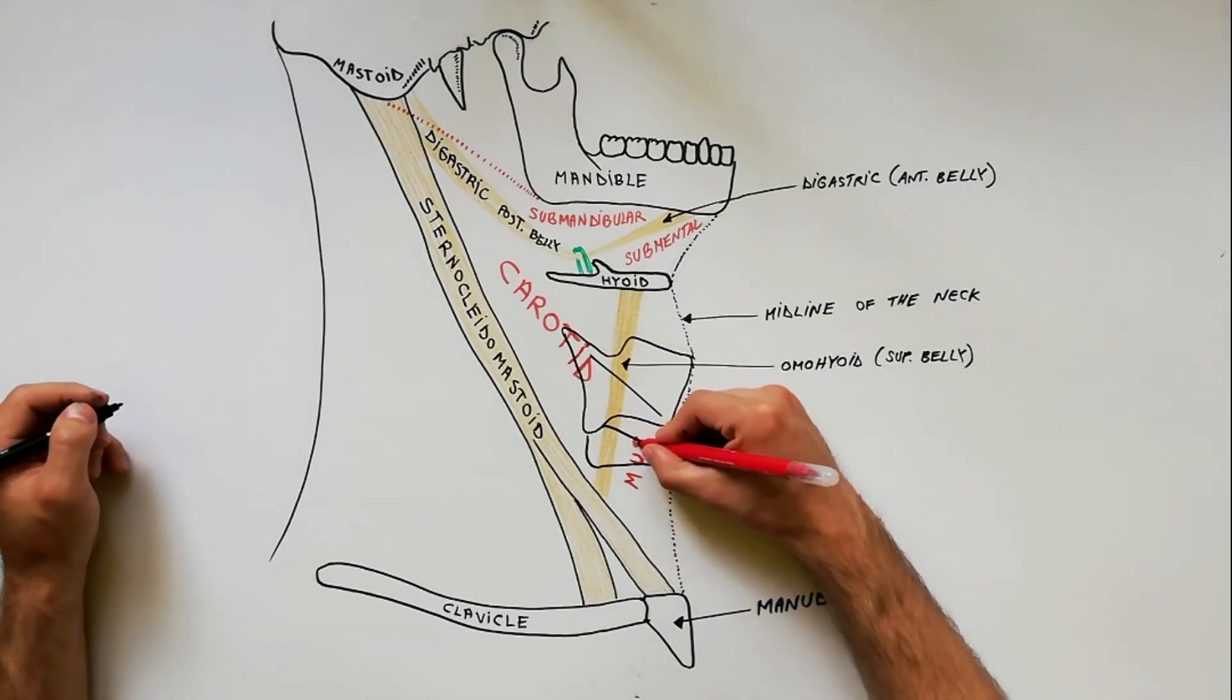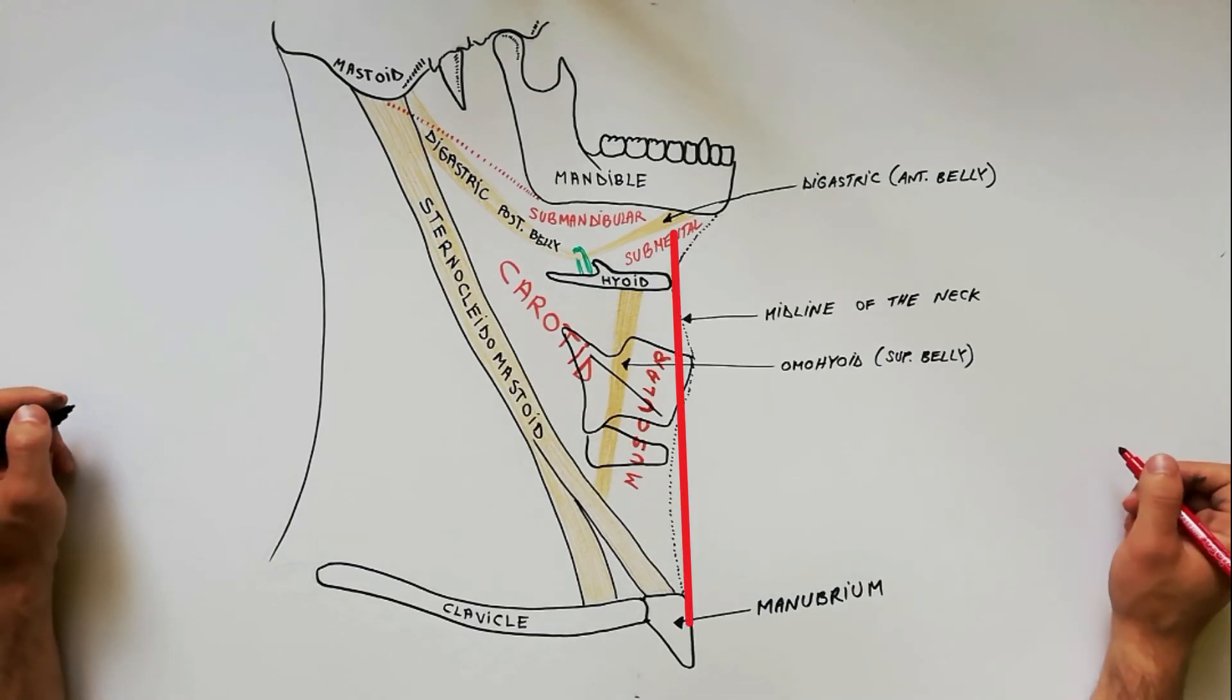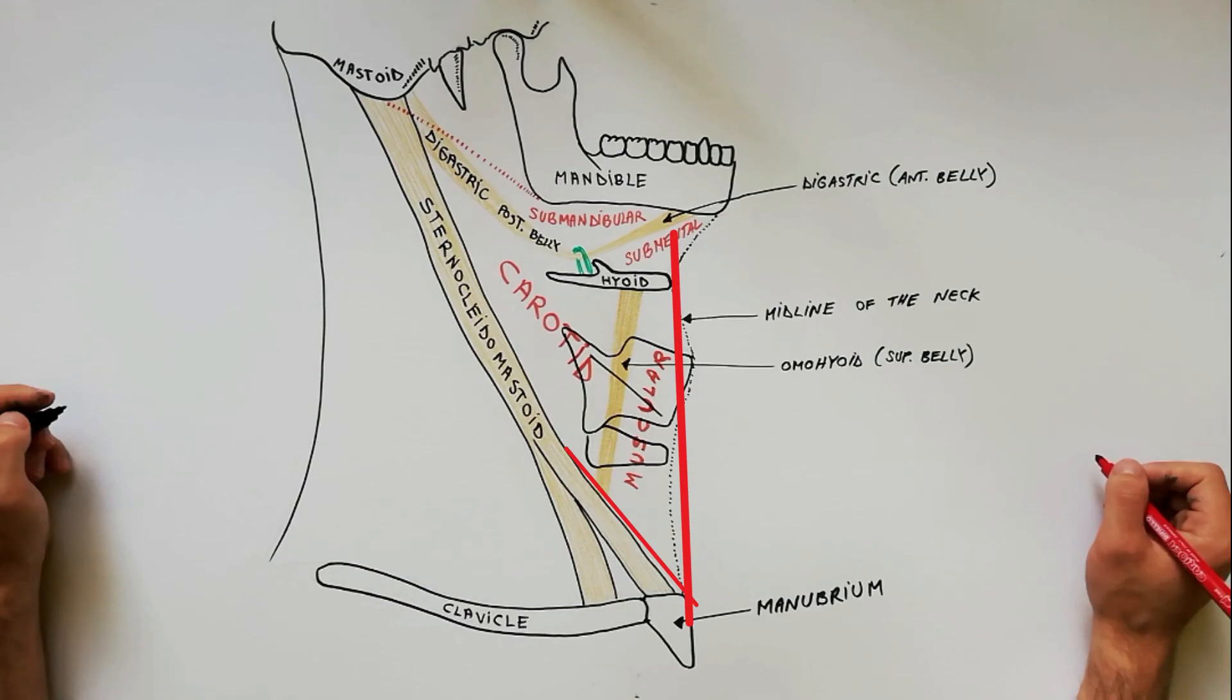The muscular triangle is bounded in front by the midline of the neck, behind by the anterior margin of the sternocleidomastoid, and above by the superior belly of the omohyoid.